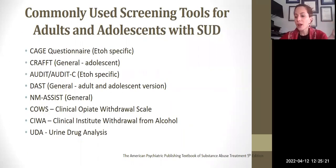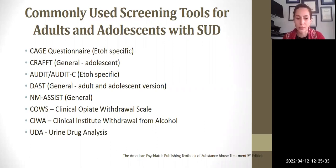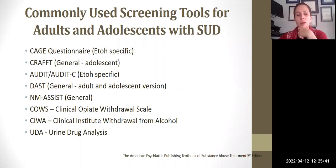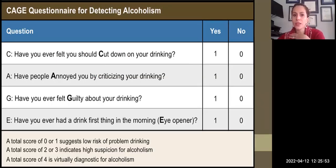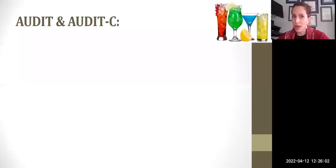A number of screeners are publicly available. SAMHSA maintains a list of public domain, evidence-based screening tools. The CAGE was one of the first screeners — specific to alcohol, a quick four-question yes/no tool. It's not used as often now because it doesn't collect a lot of information, but it is still available.